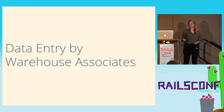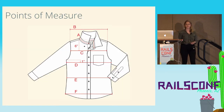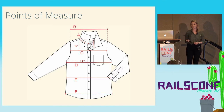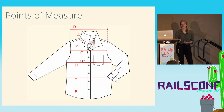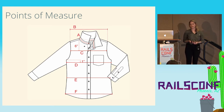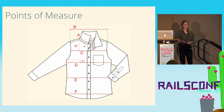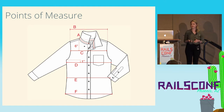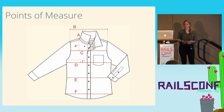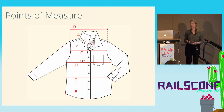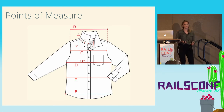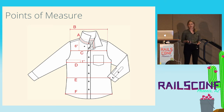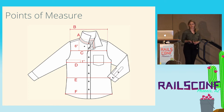Like many retail companies, Stitch Fix takes measurements of the items we bring into inventory to eventually sell to our clients. This is a diagram of a men's long-sleeve woven shirt with six marks across it — these are called points of measure. These are very specific technical retail measurements. There are actually hundreds of these measurements that can be taken, ranging from something as specific as the width of a button to as generic as the length or width of the shirt. At Stitch Fix, for any given men's shirt, we typically take about 15 to 20 measurements.